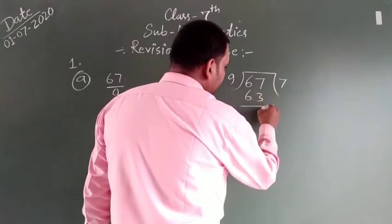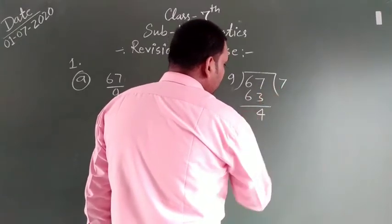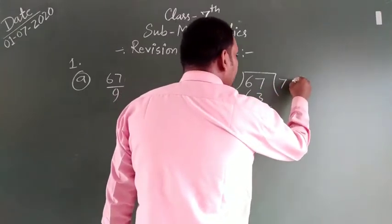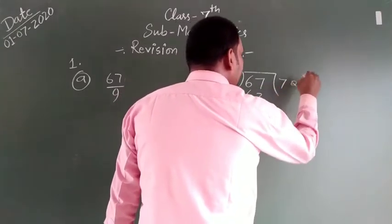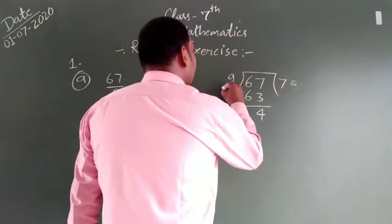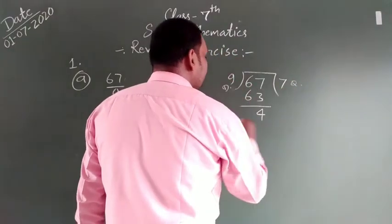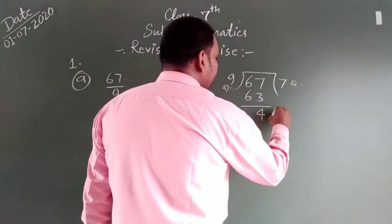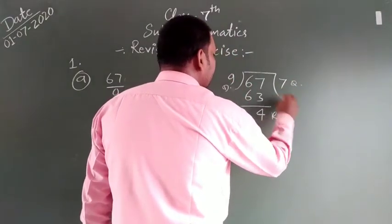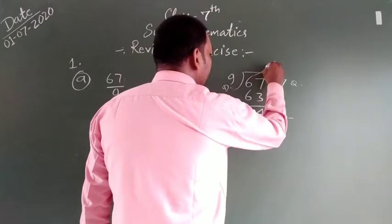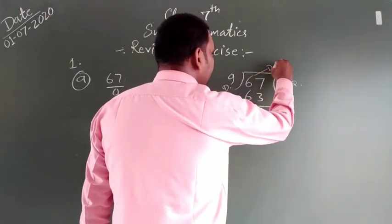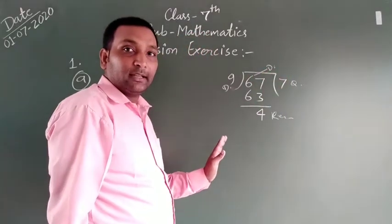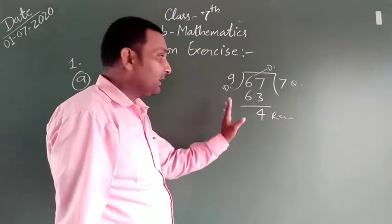So we will get 7. This is our quotient. This is our divisor. This is our remainder. This is our divisor. Divide, and this is our remainder.